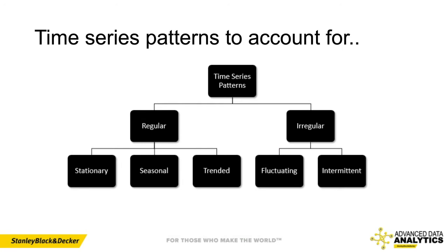You also have to account for issues with time series patterns — whether they're stationary, seasonal, trended, irregular, fluctuating, or intermittent. Stationarity means the distribution is not constant over time; intermittency means there are zero demand events; seasonality is the repetition of patterns; and fluctuating means a full change in direction or a change in trending that happens over an inconsistent period of time.